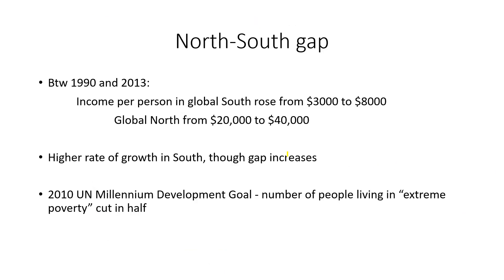Between 1990 and 2013, we have seen some measurable, significant increases. Income per person in the global south rose from $3,000 to $8,000 overall. The global north rose from $20,000 to $40,000. So there's a higher rate of growth in the south as far as percent increase, but the gap between rich and poor countries is increasing. That's one of the drawbacks of global capitalism — inequality will increase even though everybody in general is improving.